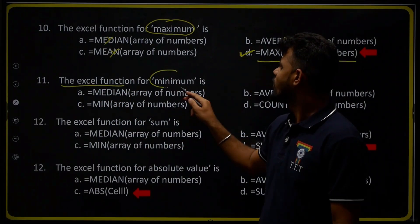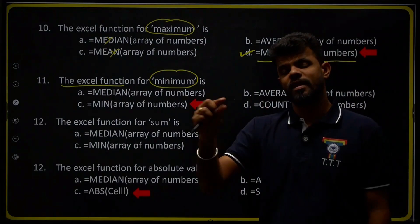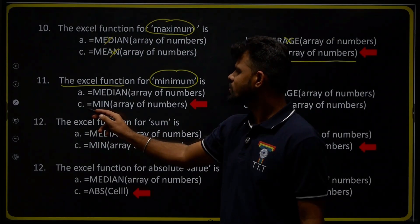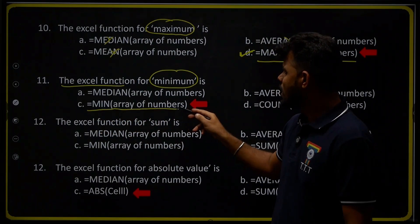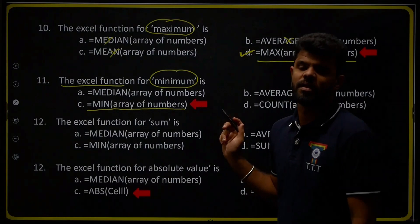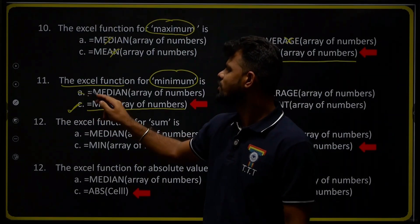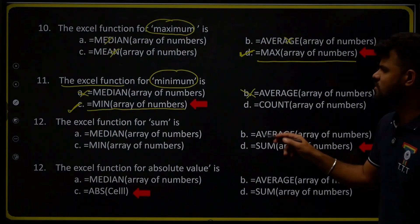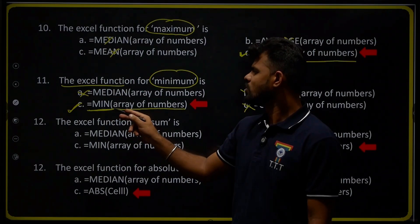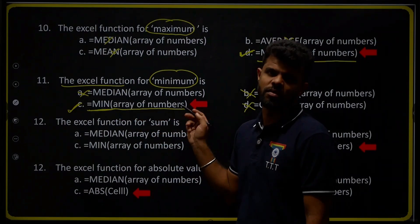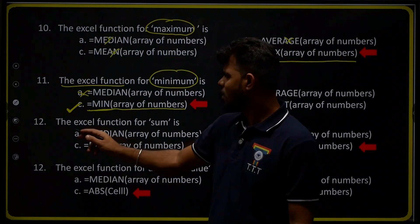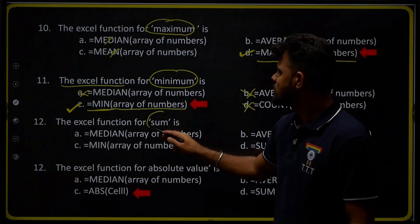Question number eleven: the Excel function for minimum value. To identify the minimum value in a selected data range we use =MIN(array of numbers). Therefore option C is the right answer. We will not use MEDIAN, AVERAGE, or COUNT — only =MIN(array of numbers), where MIN stands for minimum. Therefore option C is the right answer.